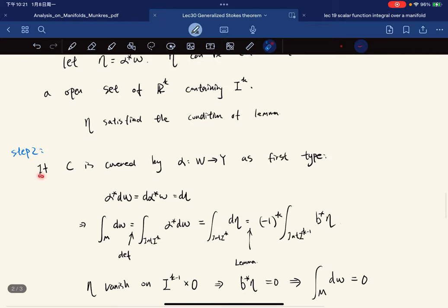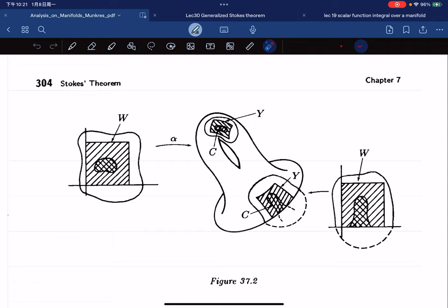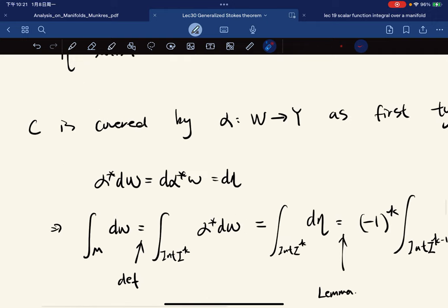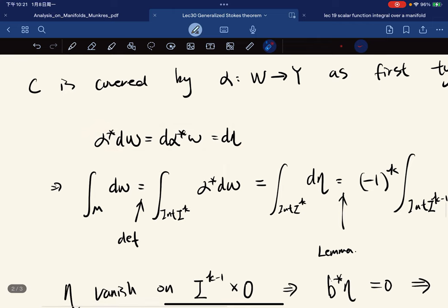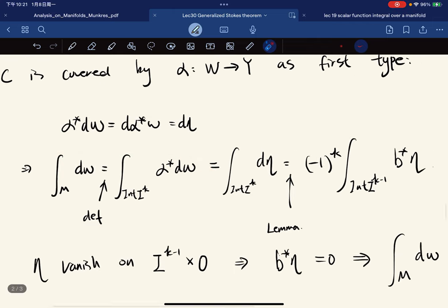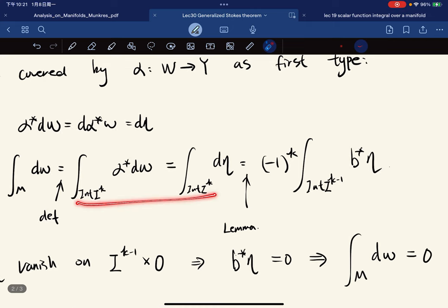And step two. If C is covered by some formula as a first type, so if we're in this case, first we do some algebra. And then we do this. This by definition, and this is equal to this, because we're given this. And this by lemma, we have this. Where beta is the mapping what I talked about.